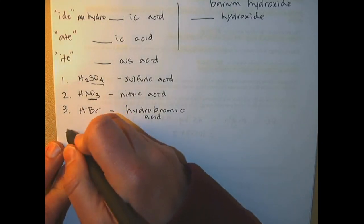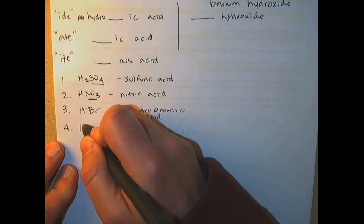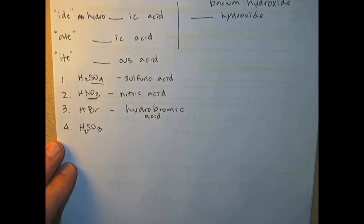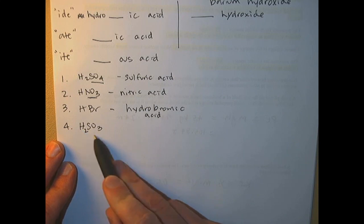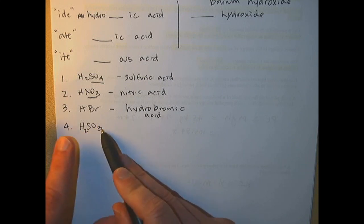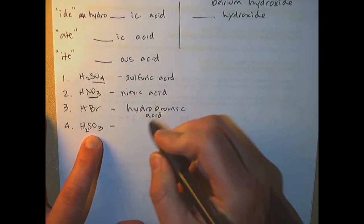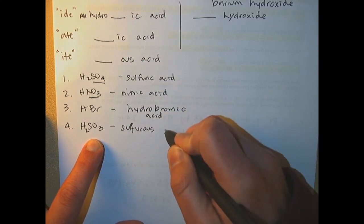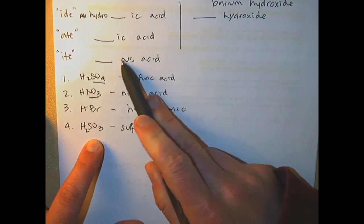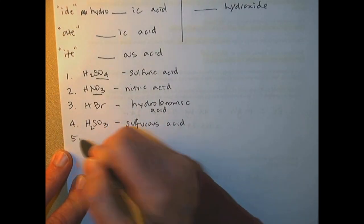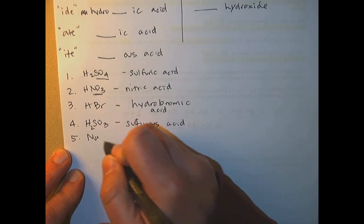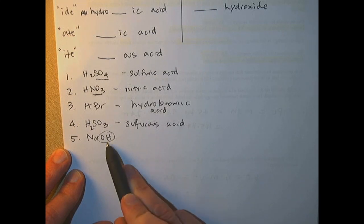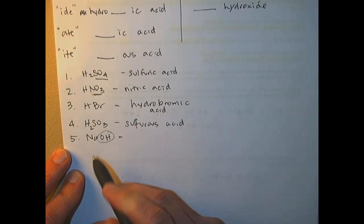H2SO3 is called hydrogen sulfite, ITE. So this becomes sulfurous acid — it was ITE and it becomes OUS acid. And then bases are really straightforward. Here's a hydroxide — you can identify this as a base because it has an OH. You just name it regular: sodium hydroxide.